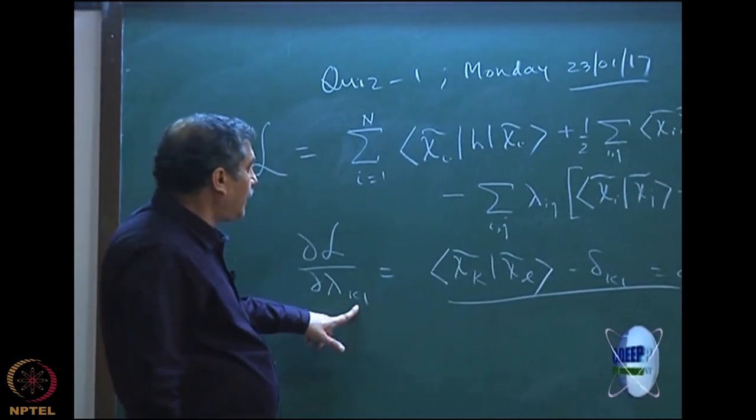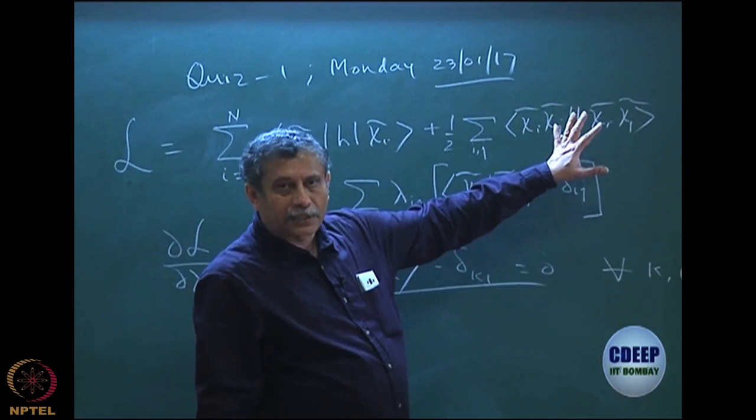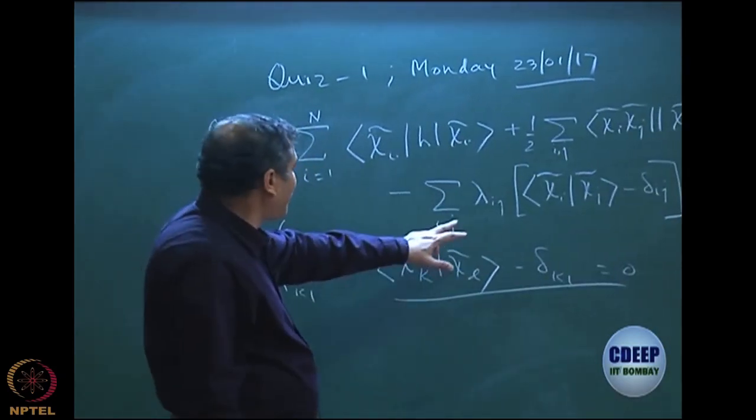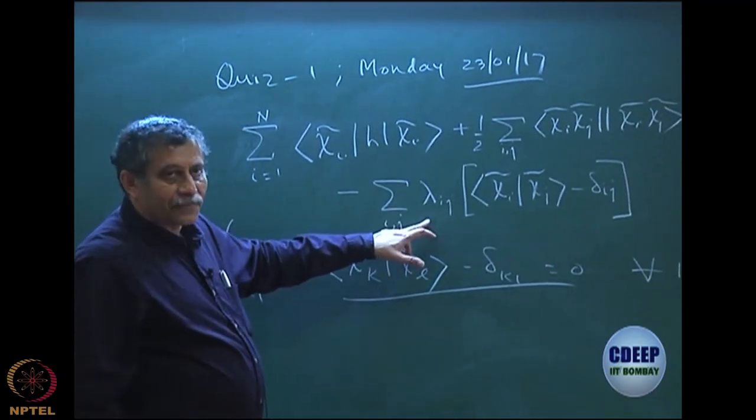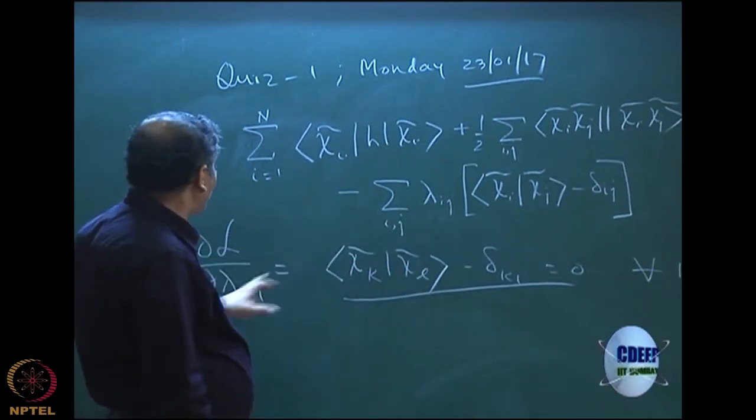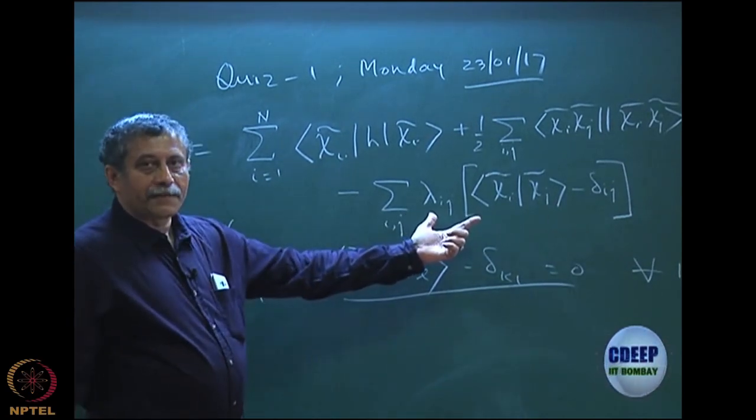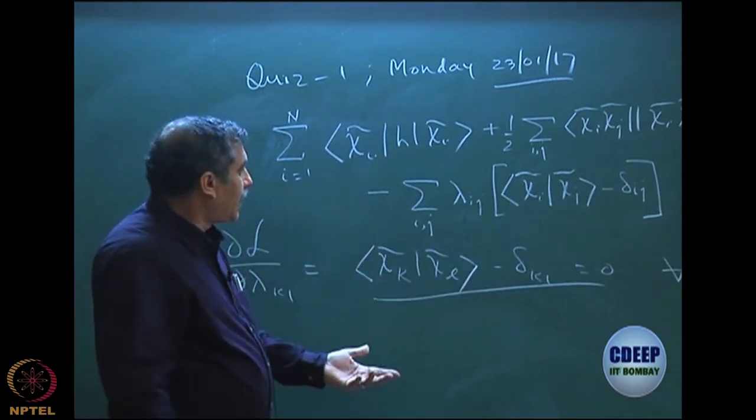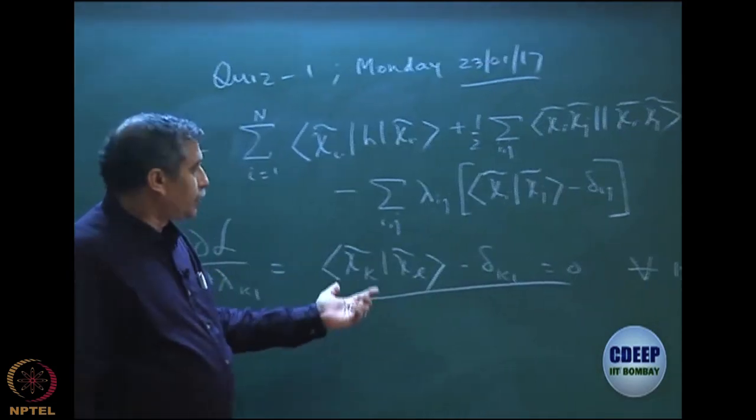Let us say I take lambda k l, then if you differentiate this, this part will not contribute because there is no lambda here, this is a partial derivative. Only this part will contribute and I hope you know how to write this because this is a dummy index ij. Only when i becomes equal to k and j becomes equal to l, this derivative will survive. Otherwise, all the others are partial derivatives and in that case, your i will become k, j will become l. So, you get this.